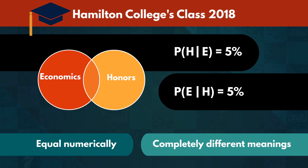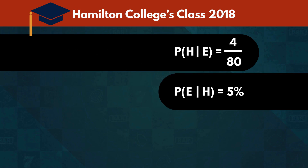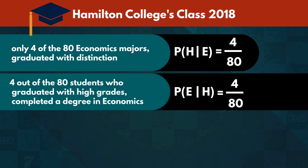In particular, the first statement suggests that only 4 of the 80 economics majors graduated with distinction. The second one suggests that 4 out of the 80 students who graduated with high grades completed a degree in economics.